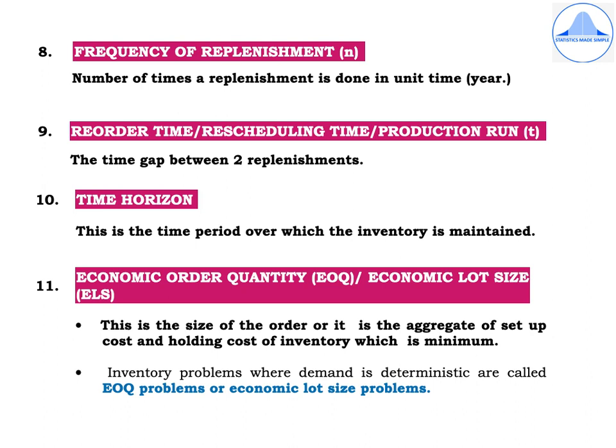Next is the economic order quantity, which is EOQ, or economic lot size, which is ELS. This is the size of the order, or the aggregate of setup cost and holding cost of inventory, which is minimum. Inventory problems where demand is deterministic are called EOQ problems or economic lot size problems.